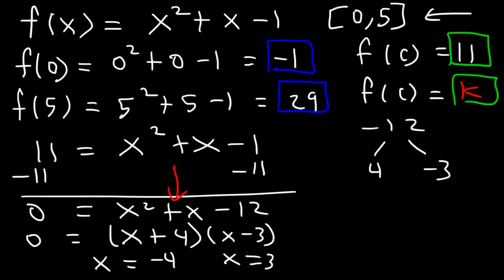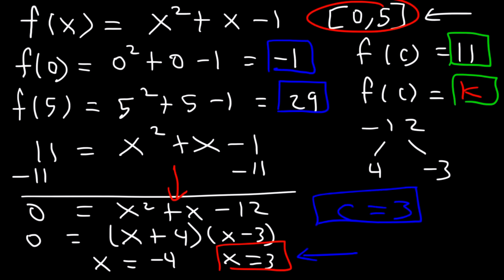So now which x value is the actual value of c? Is it negative four, or is it positive three, or is it both? We need to find out which one is in the interval. Negative four is not between zero and five, but positive three is between zero and five. So c is equal to three. f of three is 11, and three is in the interval — it's between a and b. So this is our answer: c is three.